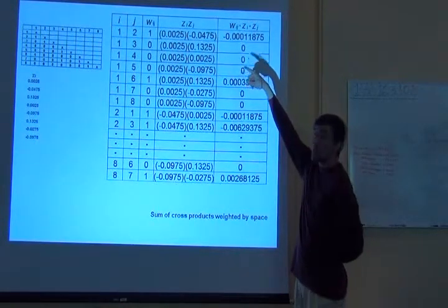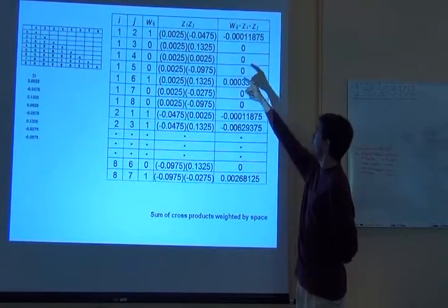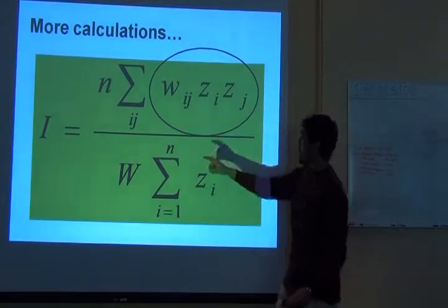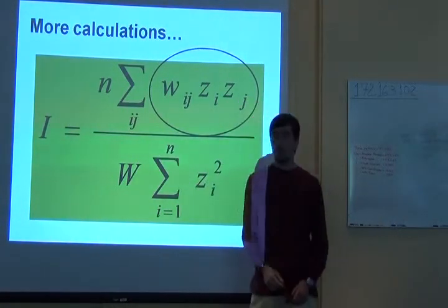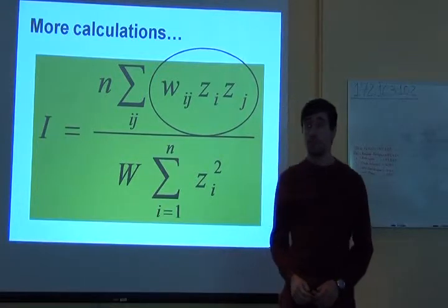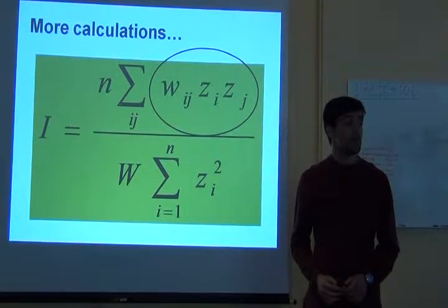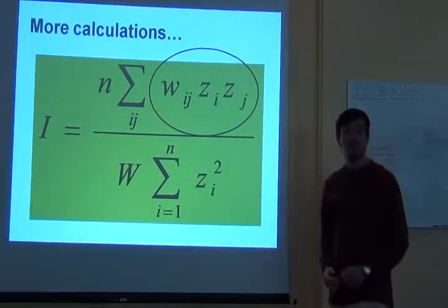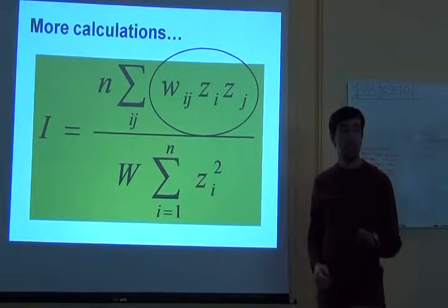And then we just sum this thing. There's going to be a lot of zeros and some numbers. But in the end, I have to sum this. Easy? How easy is that? Very easy? Easy? Medium?